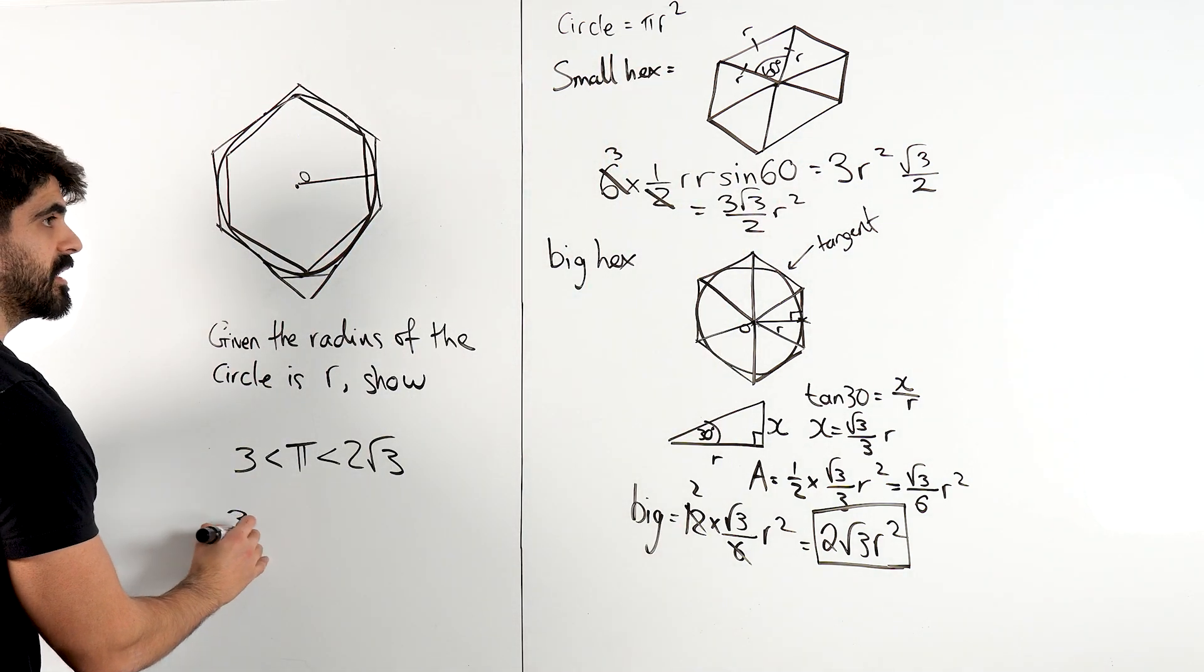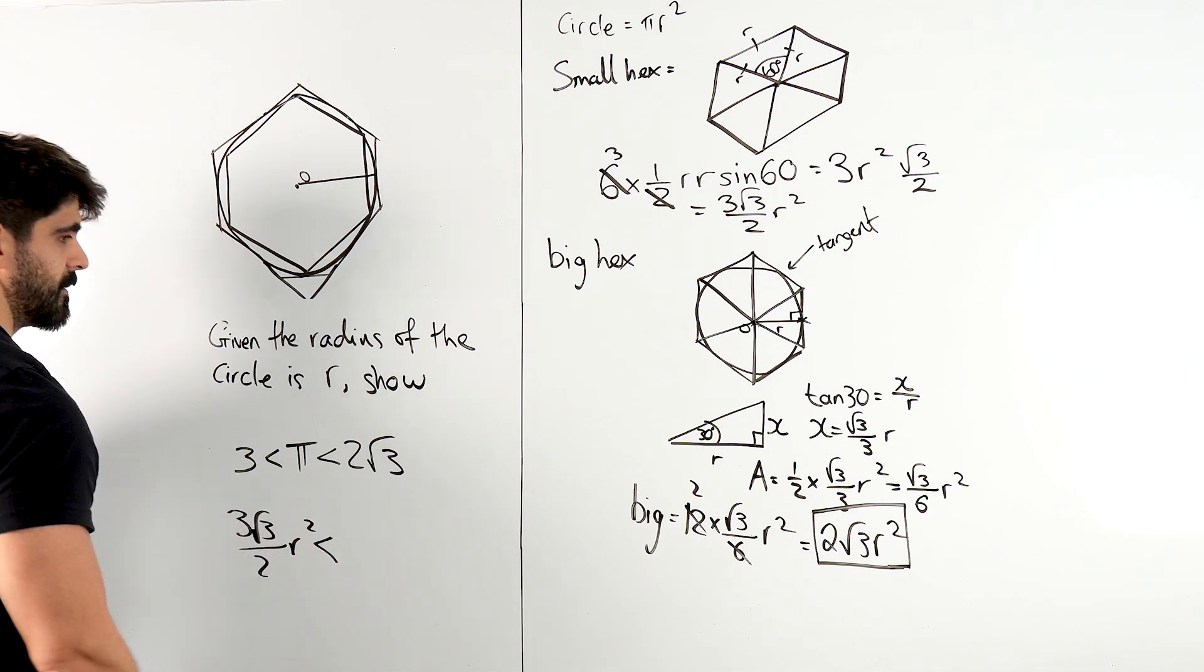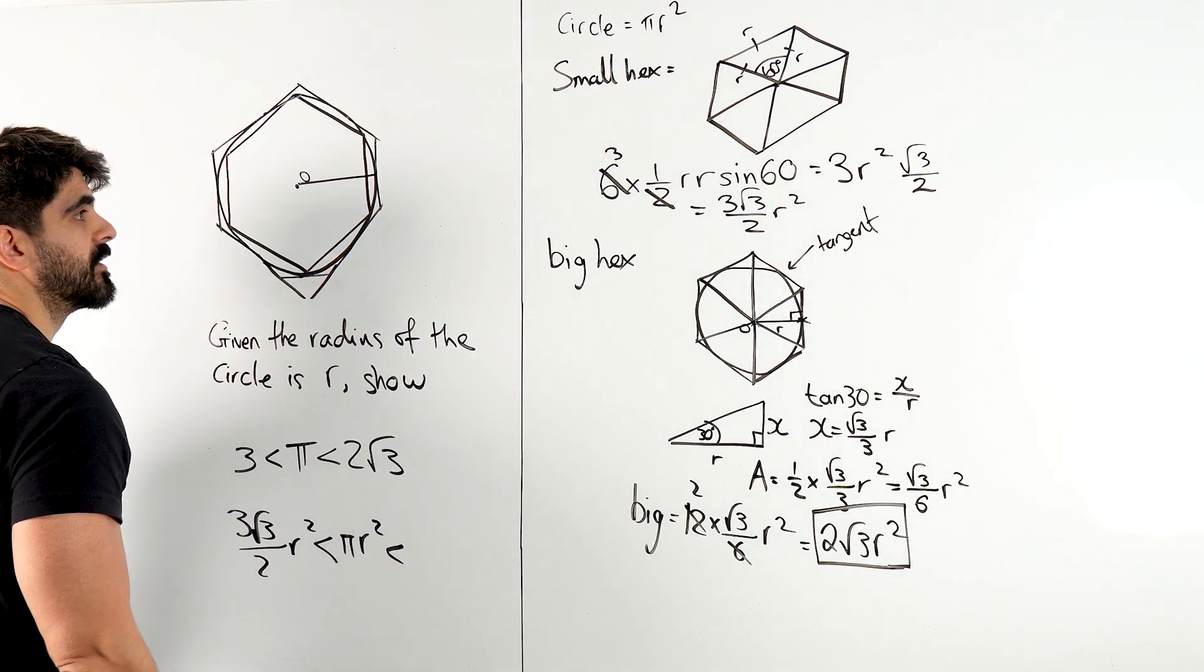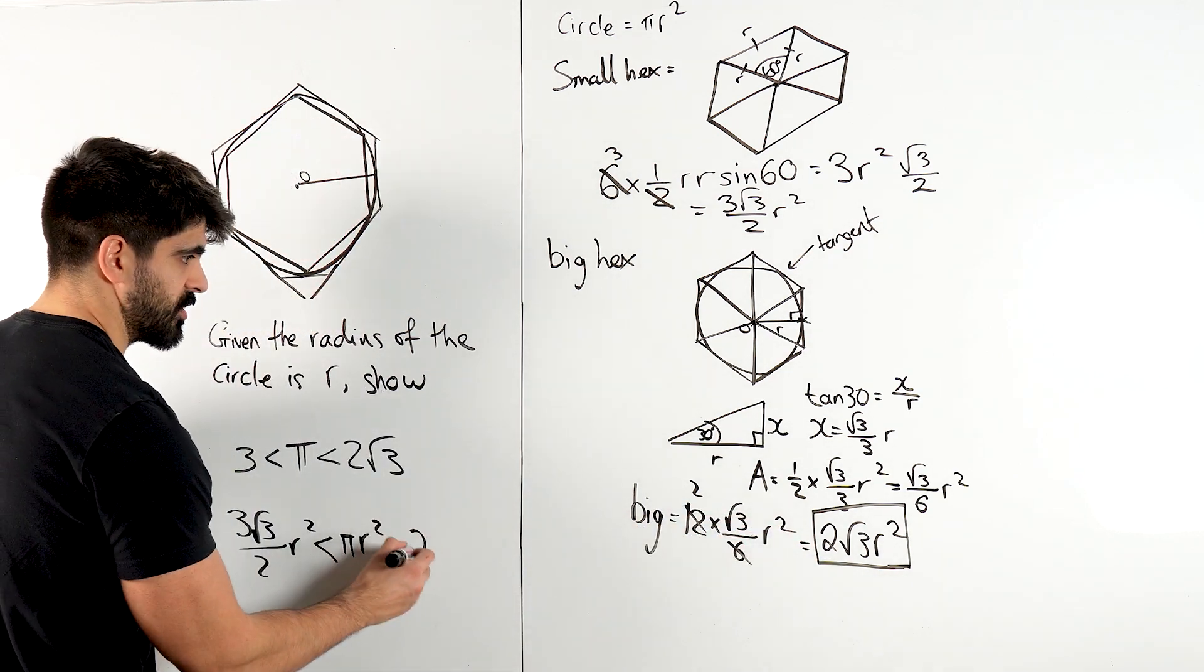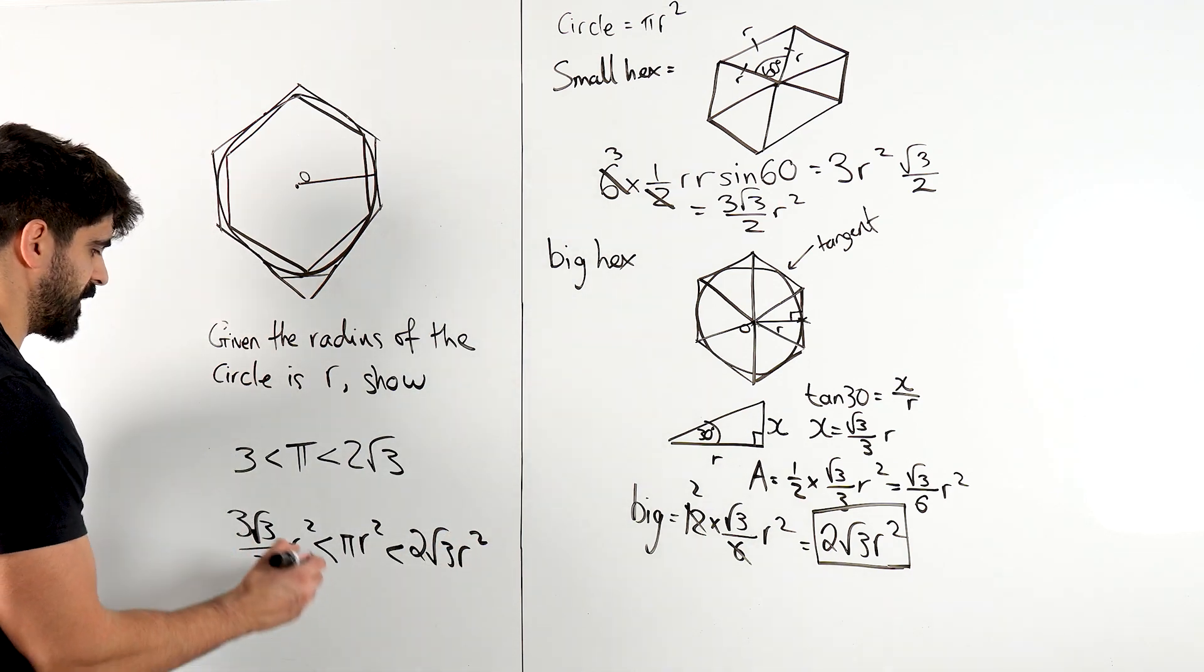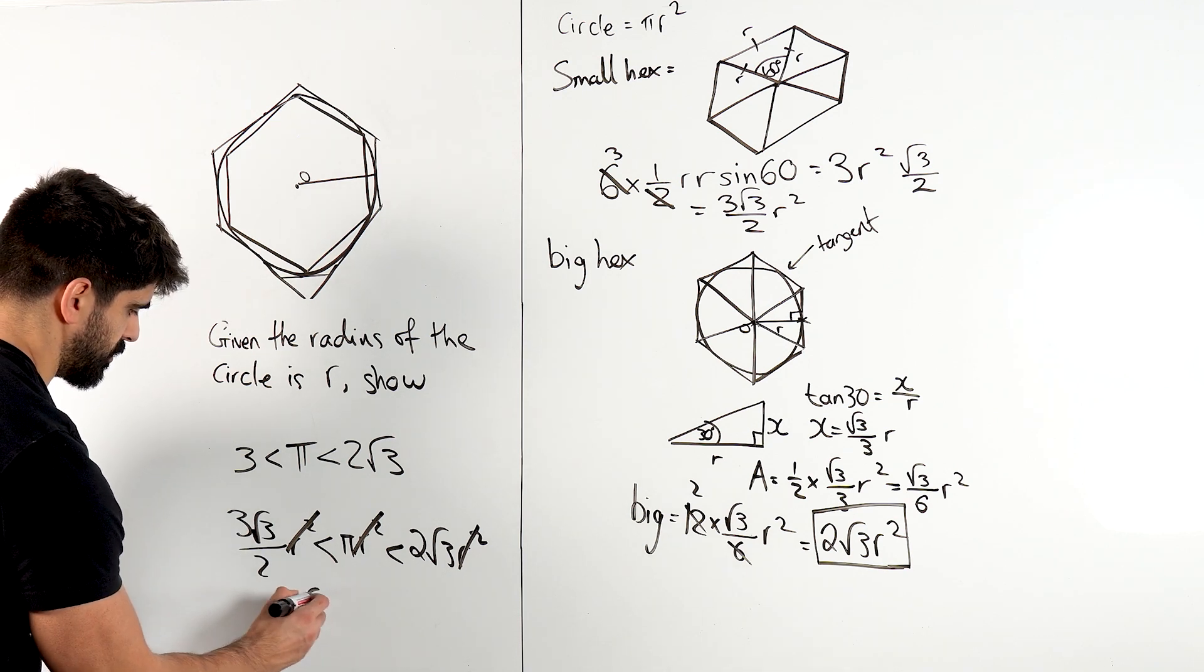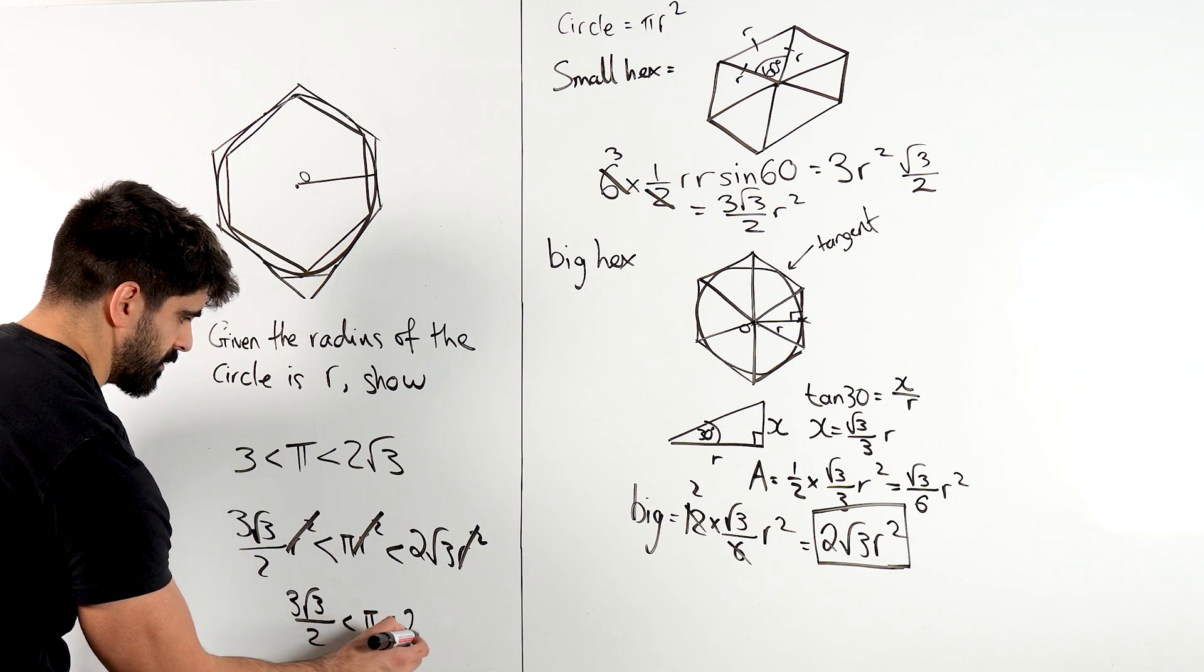So I'm saying 3 root 3 over 2 r squared, that circle is bigger than that, and less than the big hexagon, which is 2 root 3 r squared. Then when you divide through by r squared, we get that. And then we're left with 3 root 3 over 2, pi, 2 root 3.